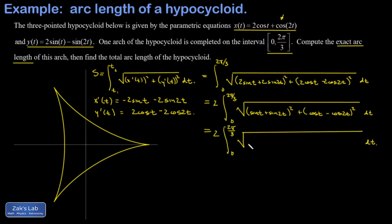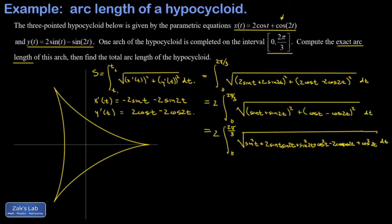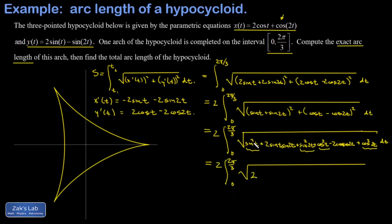Expanding the first square gives sin²(t) + 2sin(t)sin(2t) + sin²(2t). Expanding the cosine square gives cos²(t) − 2cos(t)cos(2t) + cos²(2t). Right away, sin²(t) + cos²(t) = 1 and sin²(2t) + cos²(2t) = 1, so those four terms combine to give 2. We can then factor a 2 out of the entire square root, producing a √2 out front, giving us 2√2 overall.